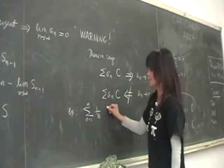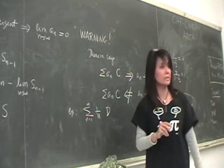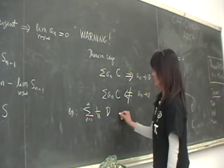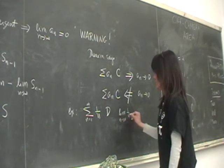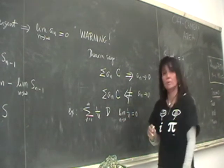This is the harmonic series, this is a divergent series, right? But if you get the limit of 1 over N as N goes to infinity, what's the answer? Zero.